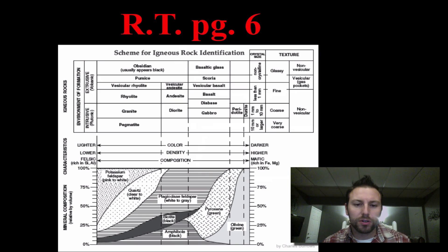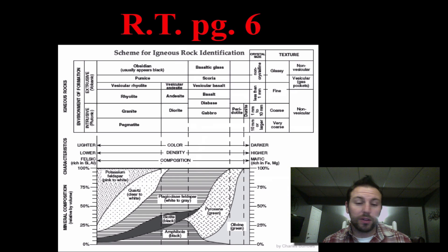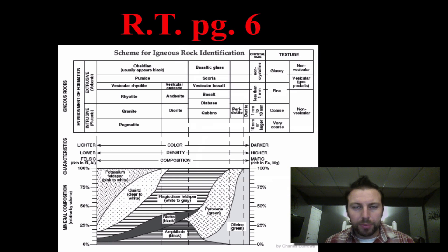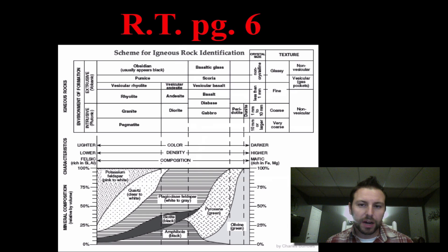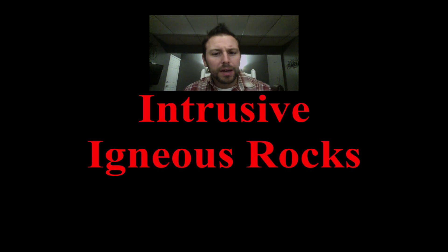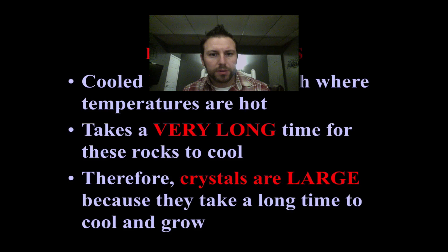Page six of our earth science reference table looks complicated, but we can break it down into smaller pieces to help identify different characteristics of igneous rocks. The first type we'll look at are intrusive igneous rocks.